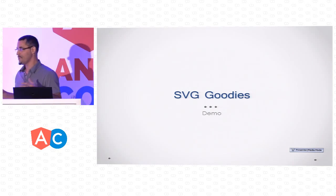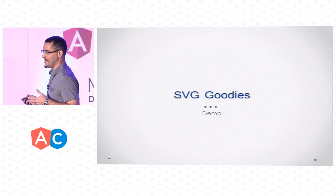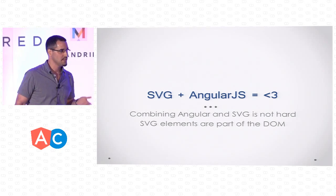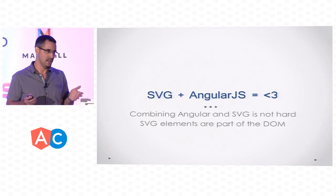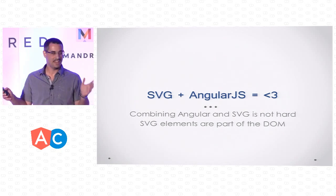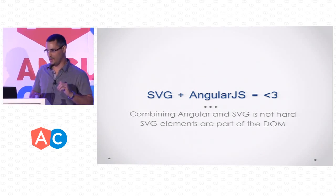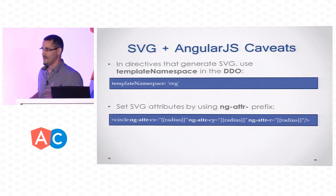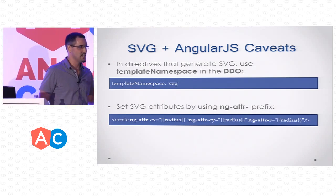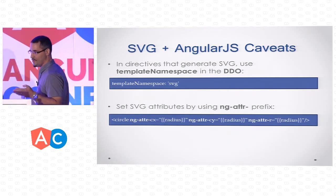So after we know that we have a graphical model that can help us create some fancy graphics, let's talk about how Angular and SVG work together. Combining SVG and Angular is very easy — SVG is just DOM. So what do you need to do? Create directives or templates, expressions, et cetera. It's not such an easy thing because there are caveats. If you are creating directives, you will have to say that the template namespace is SVG, because SVG has a different XML namespace.